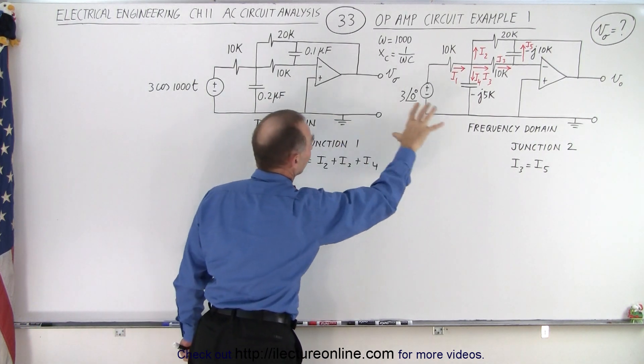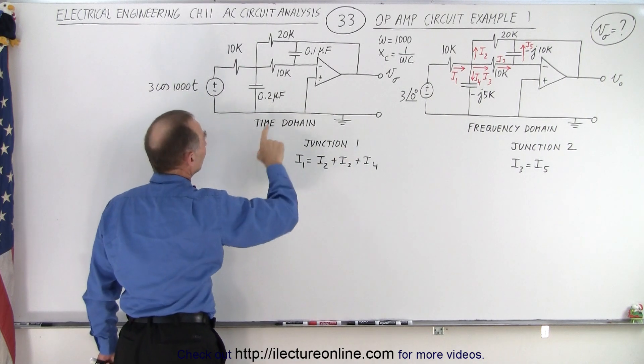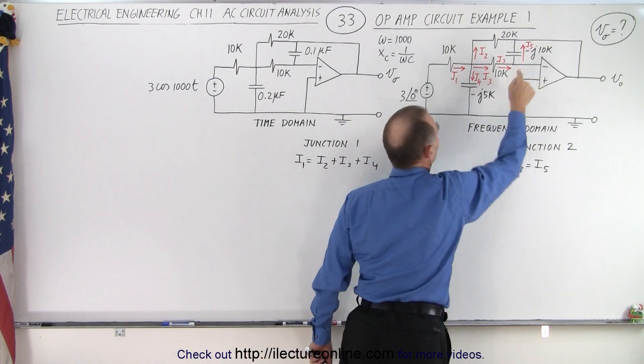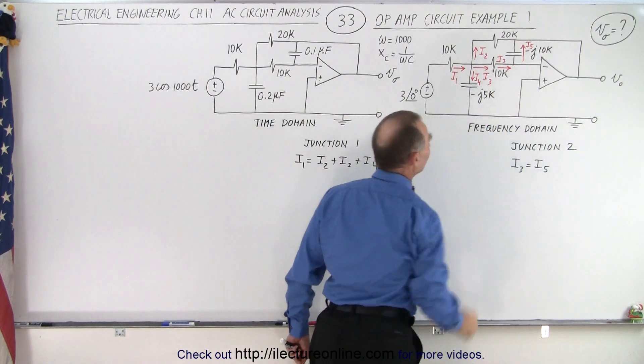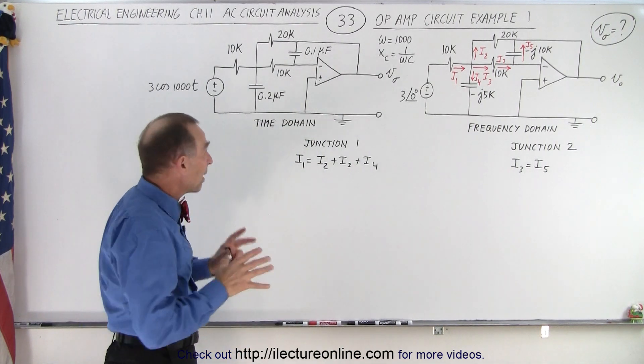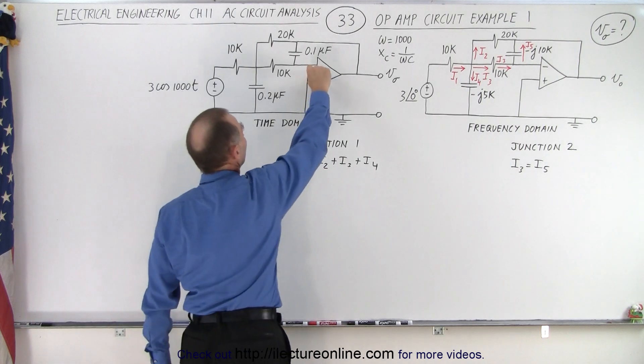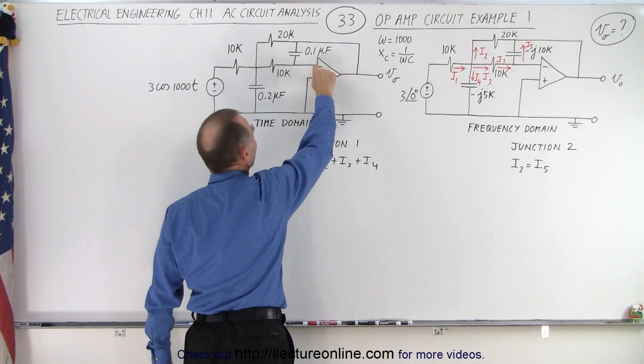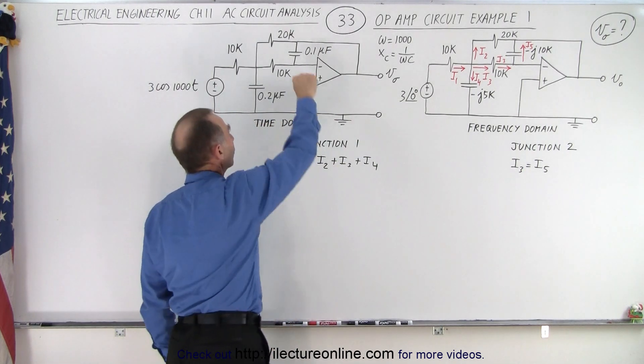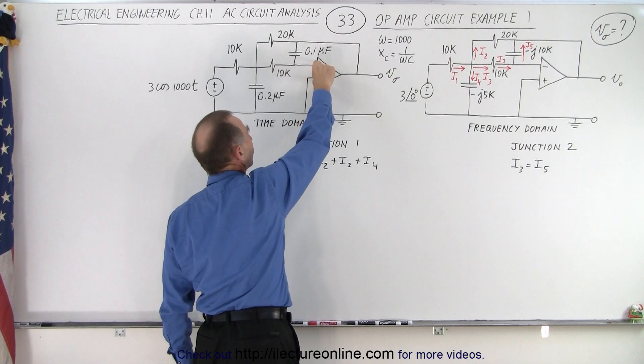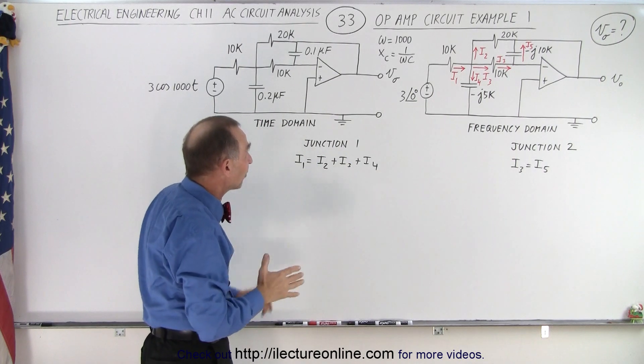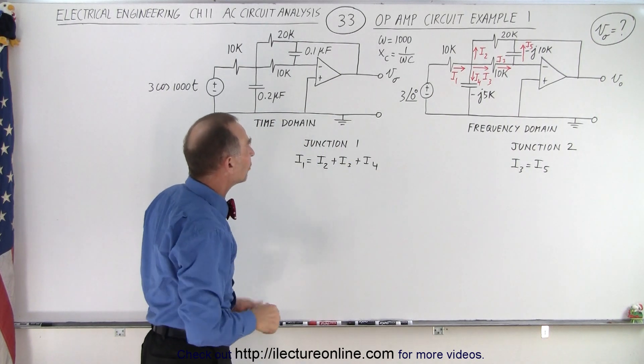And of course if we want to convert to the frequency domain, then we have to take the capacitors and change them into their capacitive reactance. A couple things we should remember with operational amplifiers. Notice that the voltage difference between the negative and the positive terminals here is essentially zero, so we can just assume them to be zero. And that the currents in and out of the two terminals of the operational amplifier is also essentially zero. Once we use that as a guide, it's a lot easier to work with these circuits.